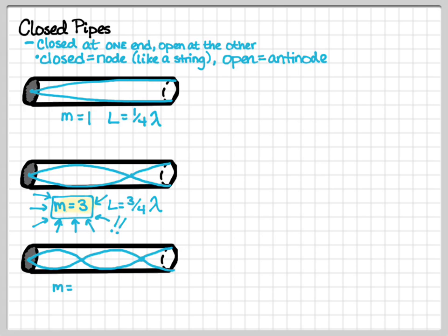Our next one, we have one whole wave and then goes from node to antinode, so that's another quarter of a wave. In this pipe, we have five-fourths of a wavelength, which means this is the fifth harmonic.